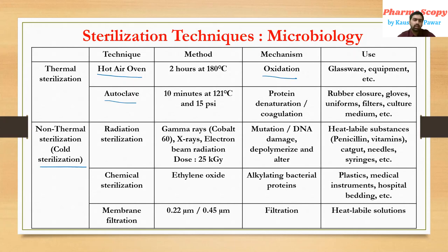The second thermal technique is the autoclave. Autoclave should be run for 10 minutes at 121 degrees Celsius and at 15 psi pressure to get a sterilized product. In an autoclave we use moist heat, and the mechanism of action is protein denaturation or protein coagulation.